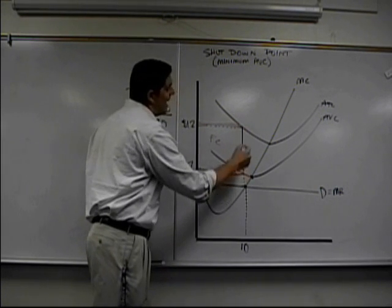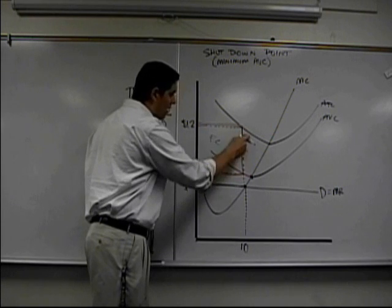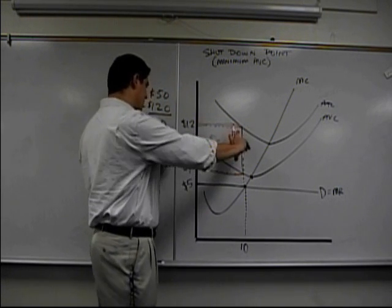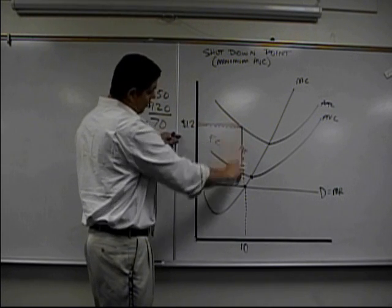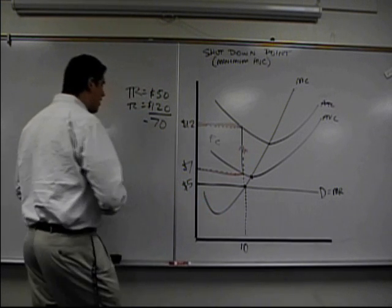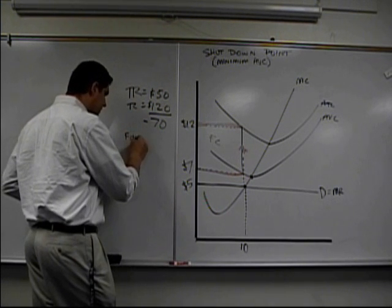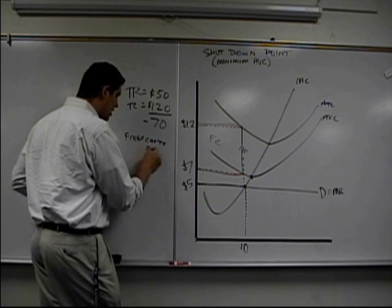Well, from here to here is AFC. AFC is that quantity. That quantity, which is, we're saying $5 times 10 is 50, right? Their fixed cost, fixed cost equals 50.